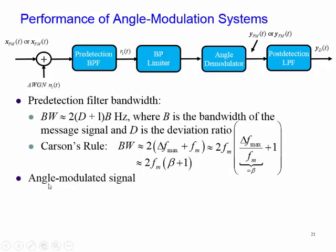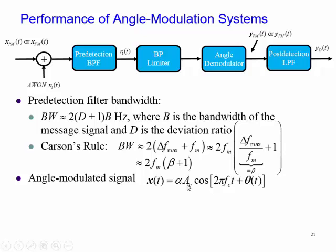For an angle modulated signal, we recall that our received signal x(t) can be generalized as an angle modulated signal, where alpha is the attenuation factor at the receiver — that is, how much the signal decreases during transmission. AC is the amplitude of the carrier, and the angle of the carrier is denoted as 2 pi fc t plus theta of t.